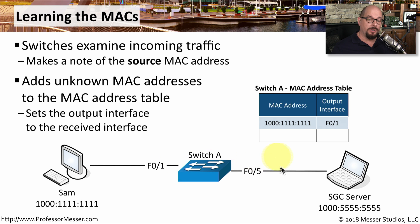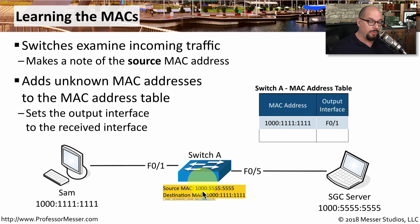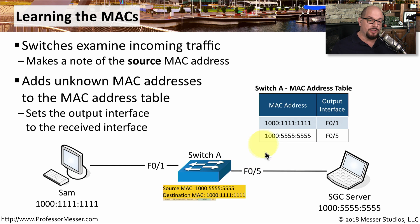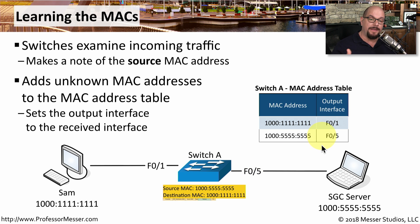The same thing would occur if the SGC server were to send information, because that source MAC address of 1000-5555-5555 also does not exist in the MAC address table. The switch makes a note of that new MAC address and sees that it was coming from fast ethernet 0/5, and adds that to be related to the MAC address inside of its MAC address table.